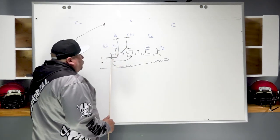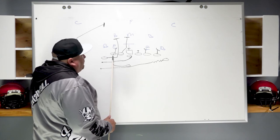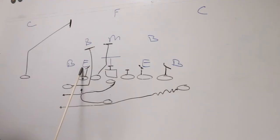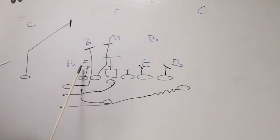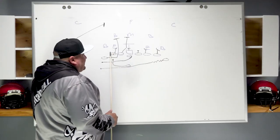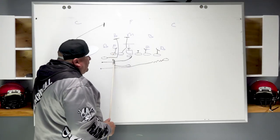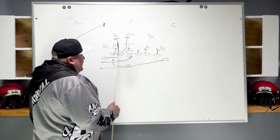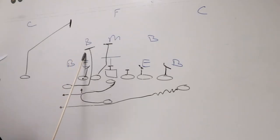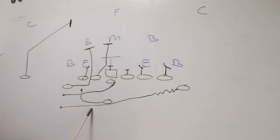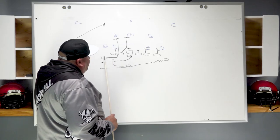The fullback reads the block of the left tackle. If the defensive tackle spikes to the B gap, he can bang the ball into the C gap. If the defensive tackle spikes into the C gap, he's gonna bang the ball into the B gap. The left wing, by design on this isolation-type play — which is our version of iso, we call it belly because it is a belly play — will insert and isolate block the playside linebacker.